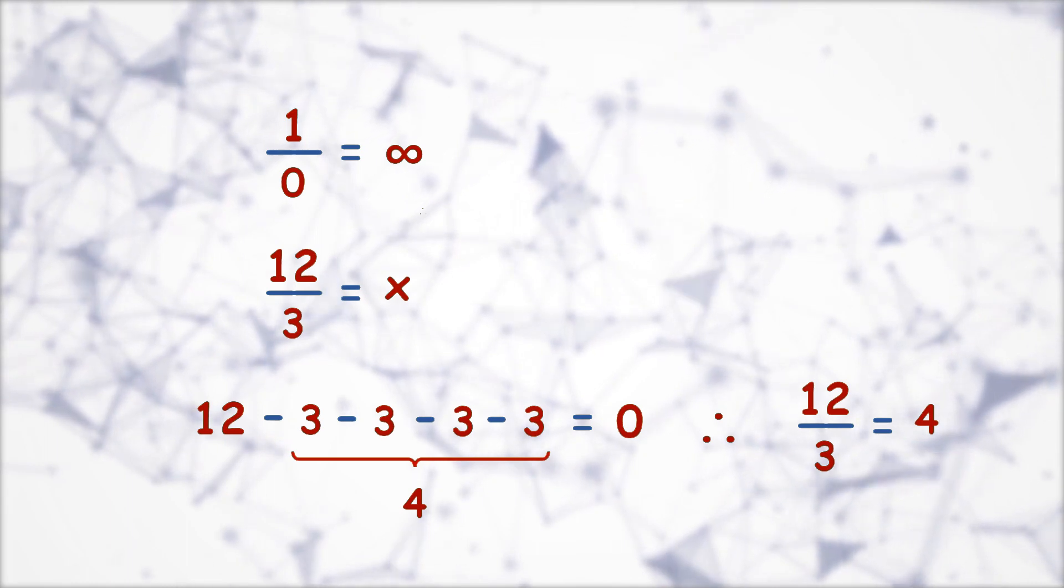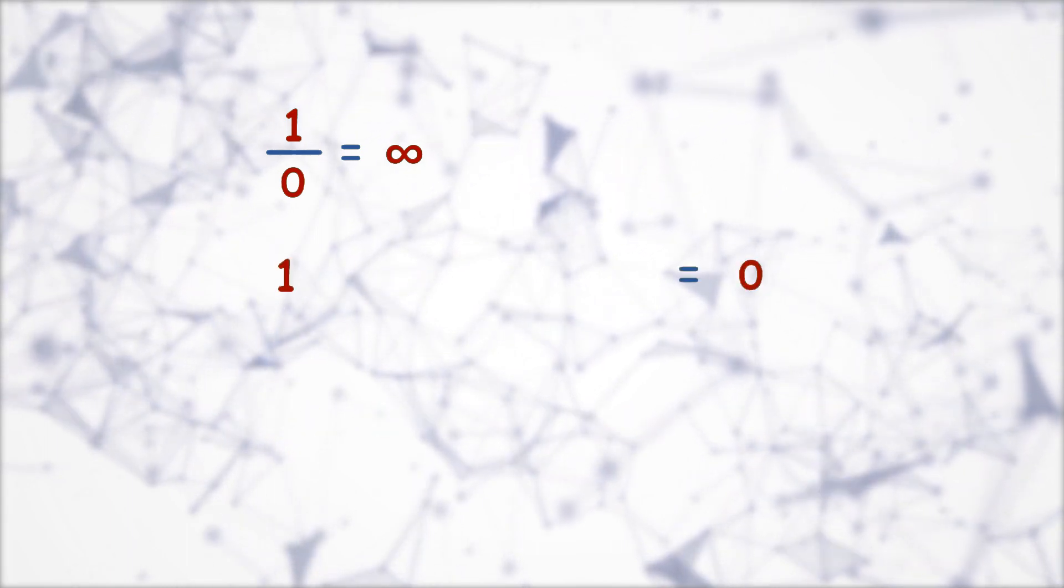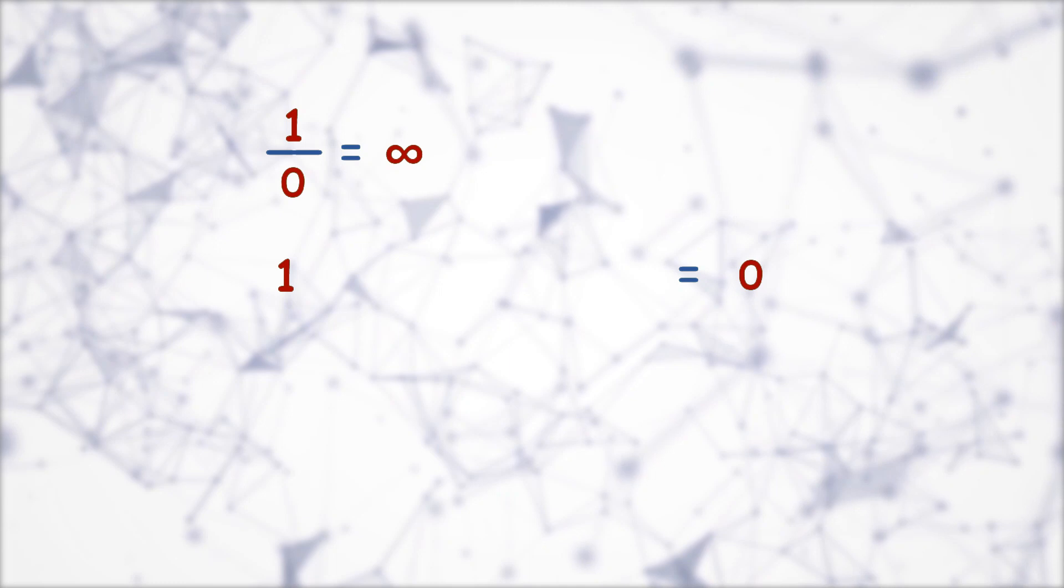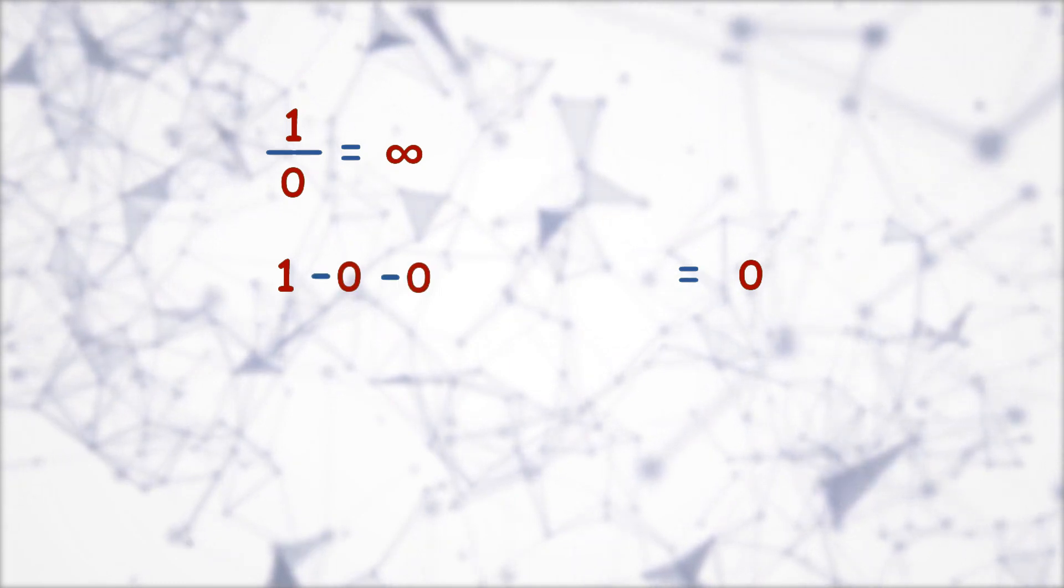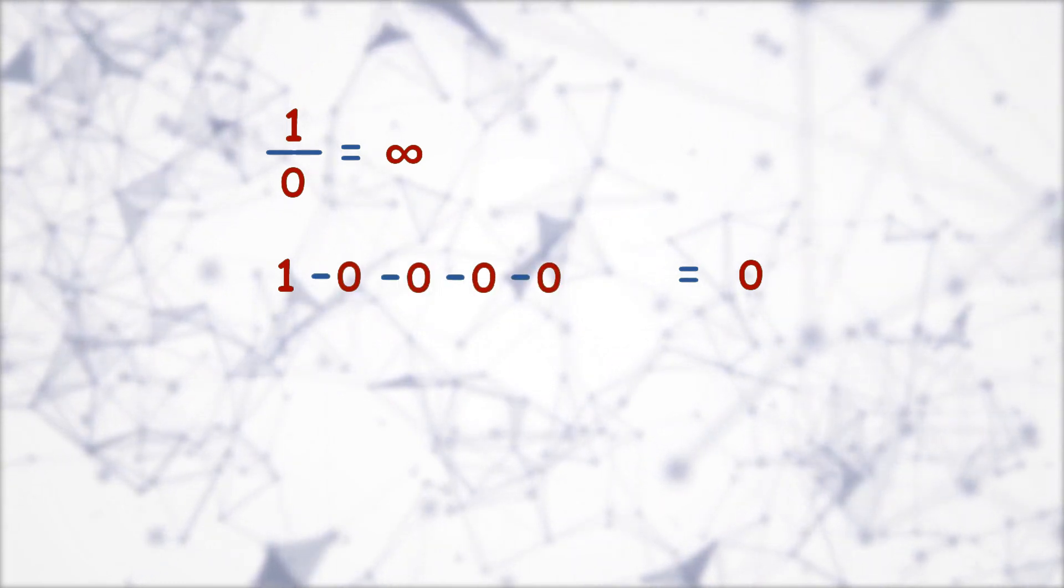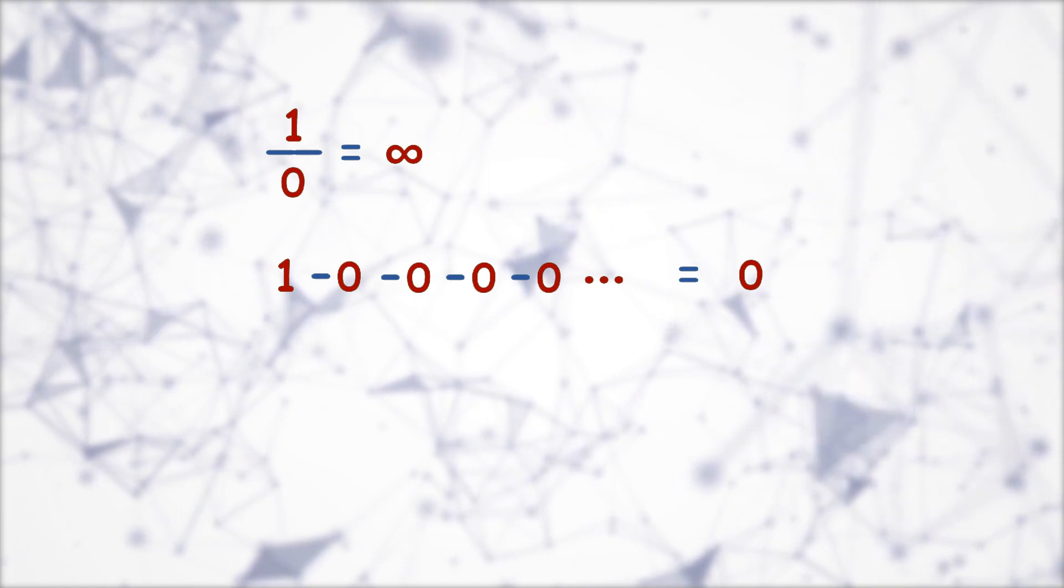Now we will check how many times we have to subtract 0 from 1 such that we get 0. So if we try to subtract this 0 one by one, we will never be able to manually reach this count.